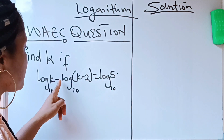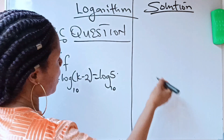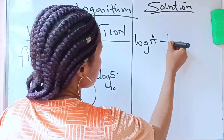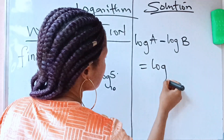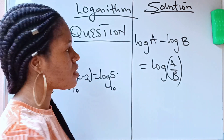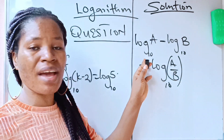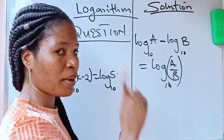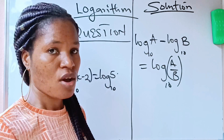Now because they are in the same base and they have a negative sign between them, there is this law of logarithms that says log a minus log b is equal to log(a over b). They are all in the same base — it can be any base — but once they are in the same base and they are subtracting, you divide.